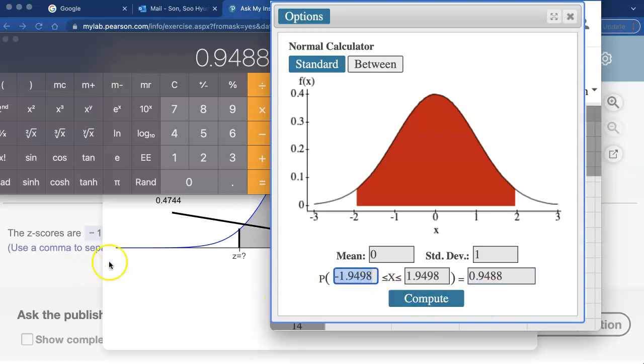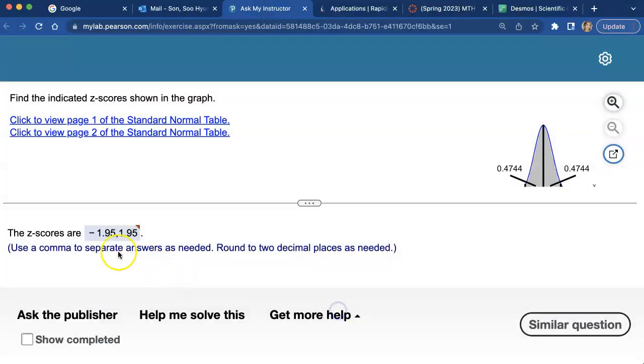That's how you can get the number negative 1.9498 and positive 1.9498. Notice this is a perfectly symmetric distribution with 0 right at the middle, so the answers will come out exactly the same with just different signs. That's how you can get this answer.